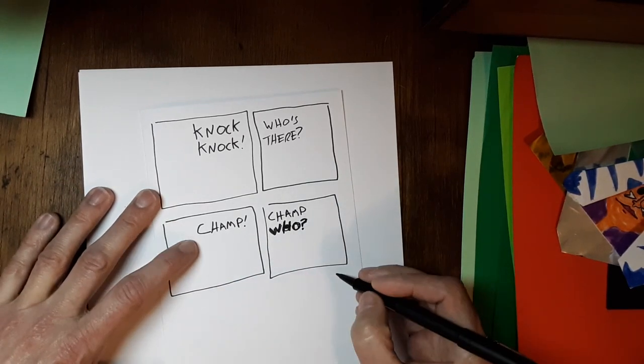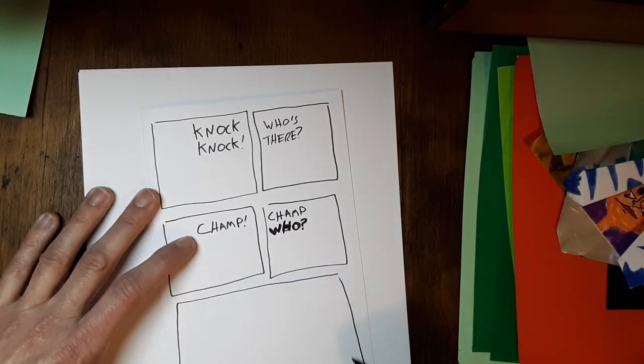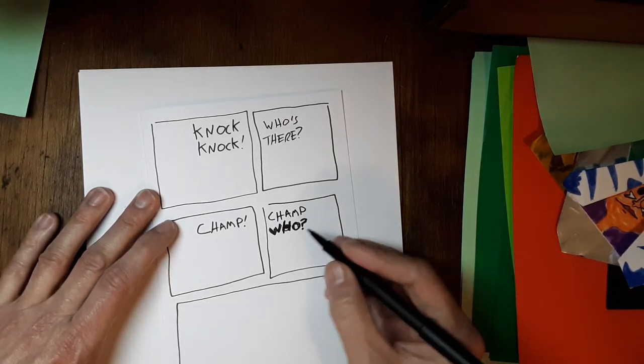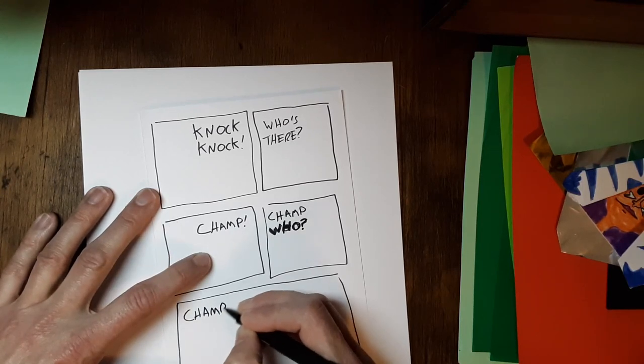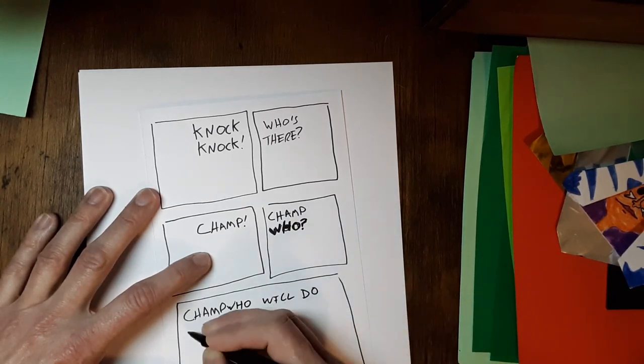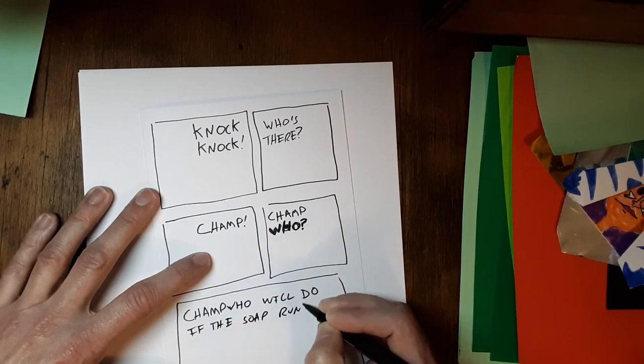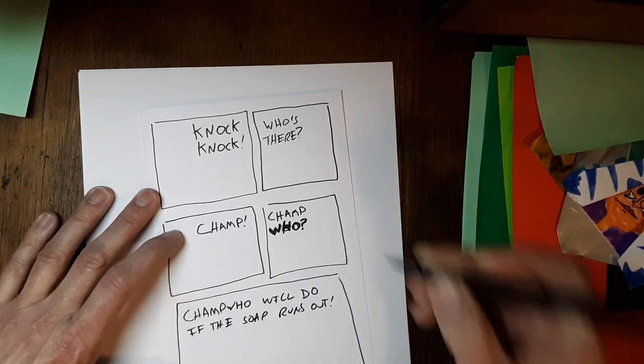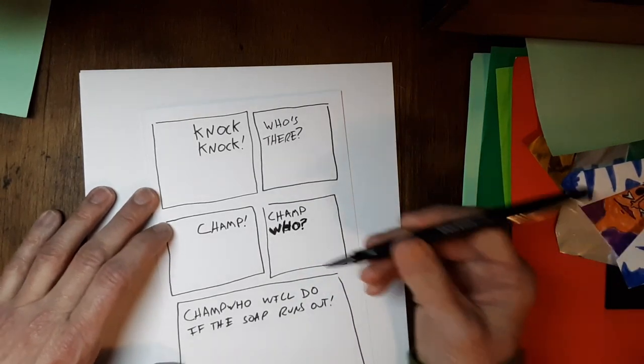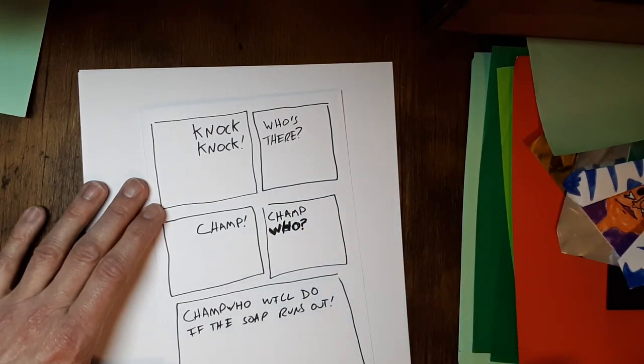And then down here for the punch line, I'm going to have some extra space. Because here I want us to have the one character say the punch line, and then I want to show the other character reacting probably with disgust at how bad the joke is. Because the joke is, champ who will do if the soap runs out. Okay, I didn't tell you this was going to be a funny knock-knock joke. In fact, are any knock-knock jokes funny? I'm not sure they are.